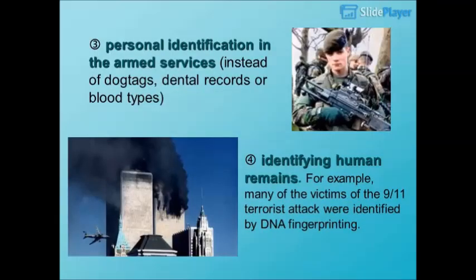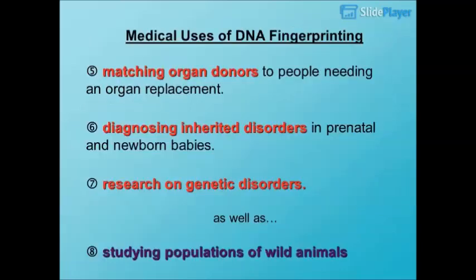Other uses of DNA fingerprinting include personal identification in the armed services instead of dog tags, dental records, or blood types; identifying human remains — for example, many victims of the 9/11 terrorist attack were identified by DNA fingerprinting; matching organ donors to people needing an organ replacement; and diagnosing inherited disorders in prenatal and newborn babies, as well as research on genetic disorders.